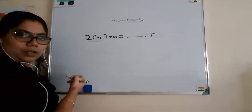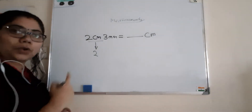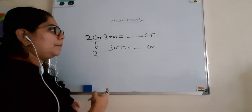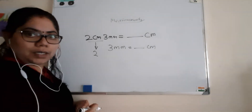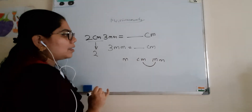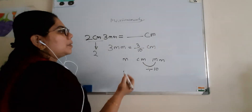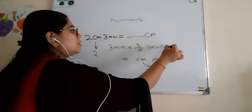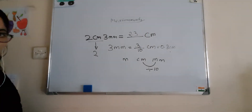Here it is already in centimeter, so 2 stays as 2. Then the remaining 3 millimeter you want to convert to centimeter. Millimeter is the smallest unit, and next to it is centimeter, so it is just one step — that means you divide by 10. So 3 divided by 10 is one step left shifting, which gives 0.3 centimeter. So 2 and 0.3 makes 2.3 centimeter.